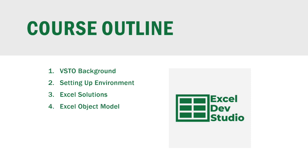In section four, we discuss the Excel object model. We will give an overview of the various Excel objects and cover examples of how to use them. Specifically, we will cover the workbook, worksheet, and range objects. These particular objects are the heart of VSTO programming. In section five, we cover customizing the ribbon in more detail. The ribbon can be customized to suit our needs, and here we discuss how to do that.